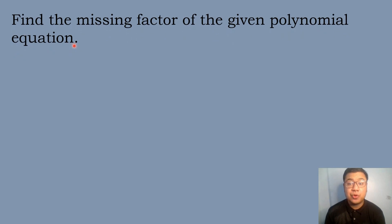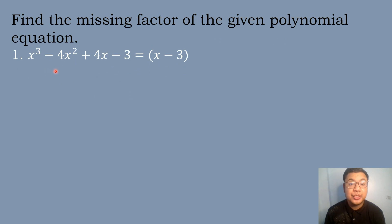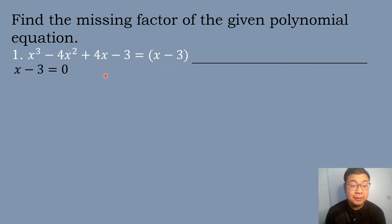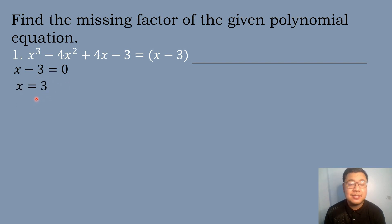So let's have our first example. Find the missing factor of the given polynomial equation x cubed minus 4x squared plus 4x minus 3 equals x minus 3. So we will find its missing factor using synthetic division. We will equate x minus 3 to 0, giving us x equals 3, which we will use as our divisor.